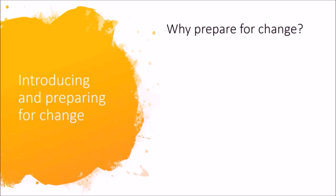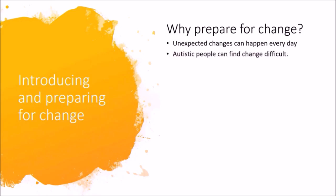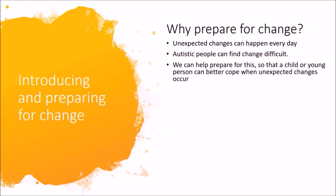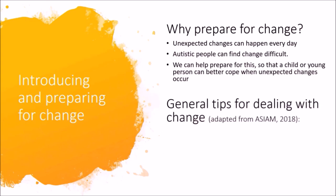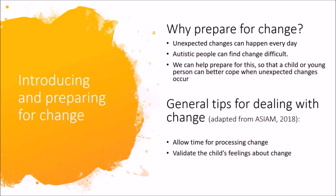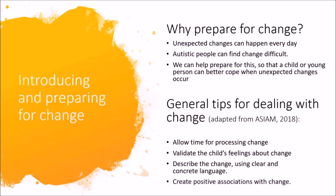Now I'm going to speak a little bit about introducing and preparing for change. Unexpected changes can happen every day and this can be difficult for all of us. Some autistic people can find change particularly difficult. We can help prepare for change so that a child or young person can better cope when unexpected changes occur. General things we can do: allow time for a child to process change, validate their feelings about change, describe the change using clear and concrete language, and create positive associations with change.